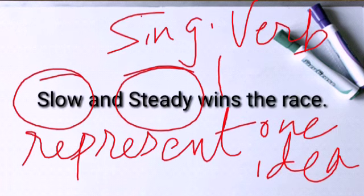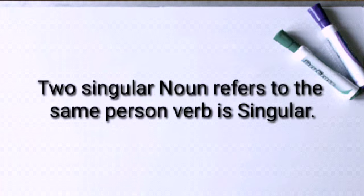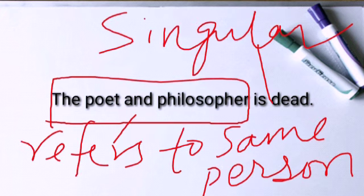However, if two singular nouns joined by 'and' represent one idea, they take a singular verb. For example: 'Slow and steady wins the race.' Here 'slow and steady' are joined by 'and' but represent a single idea, so the verb is singular. Similarly, if two singular nouns refer to the same person or thing, the verb must be singular — for example: 'The poet and philosopher is dead,' where the subject indicates one person.